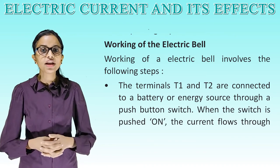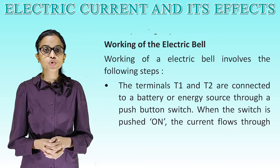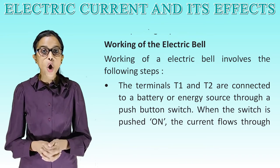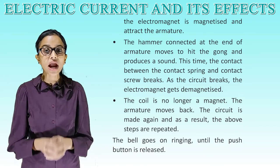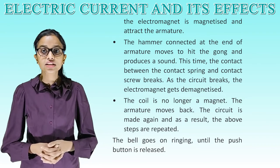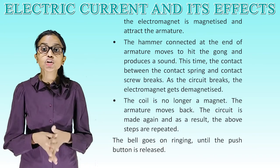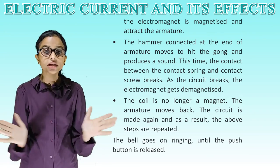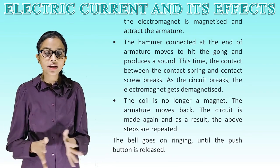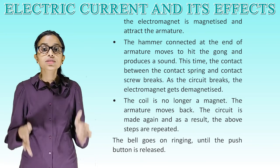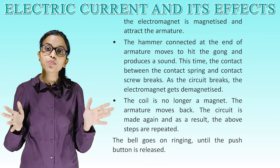Working of the electric bell. The terminals T1 and T2 are connected to a battery through a push-button switch. When the switch is pushed on, the current flows through the electromagnet, which gets magnetized and attracts the armature. The hammer connected at the end of the armature moves to hit the gong and produces a sound. At this point, the contact between the contact spring and contact screw breaks, so the circuit breaks. The electromagnet gets demagnetized and the armature moves back. The circuit is made again and the above steps are repeated. The bell keeps ringing until the push-button is released.